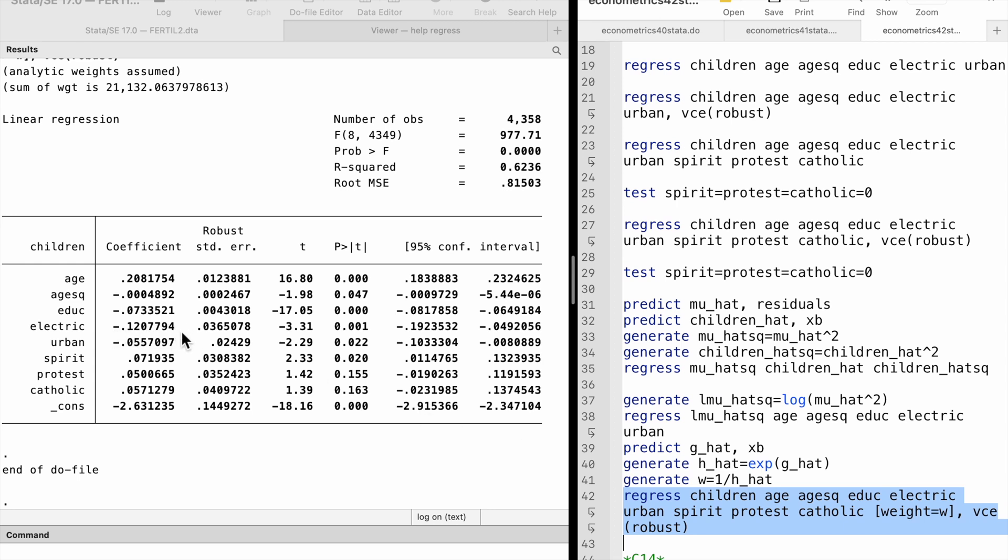The urban area effect also reduces a lot. But the education effect remains similar. It is better to show both results.